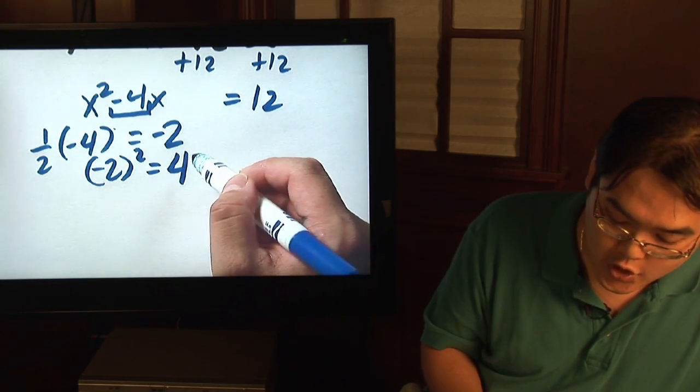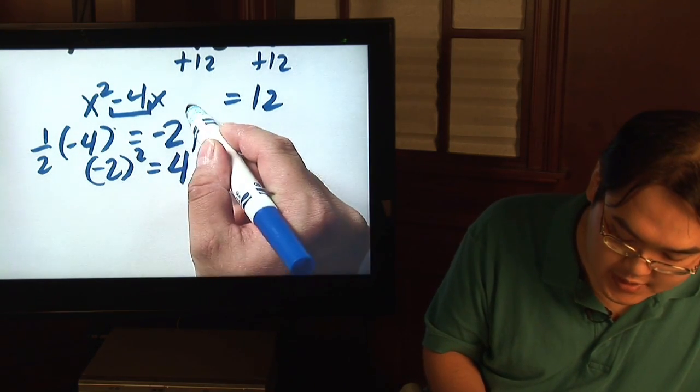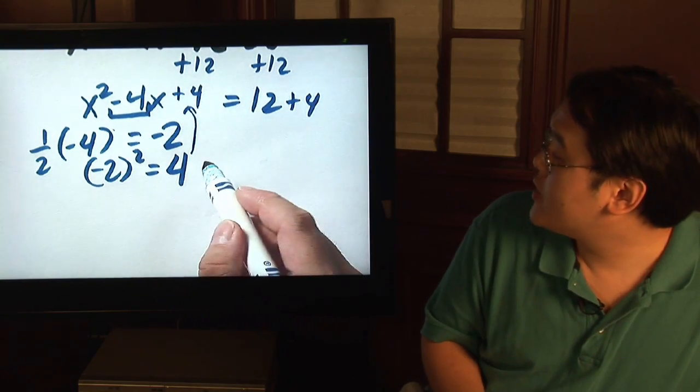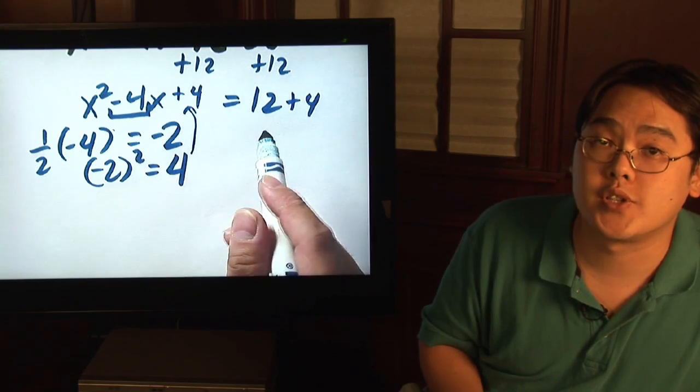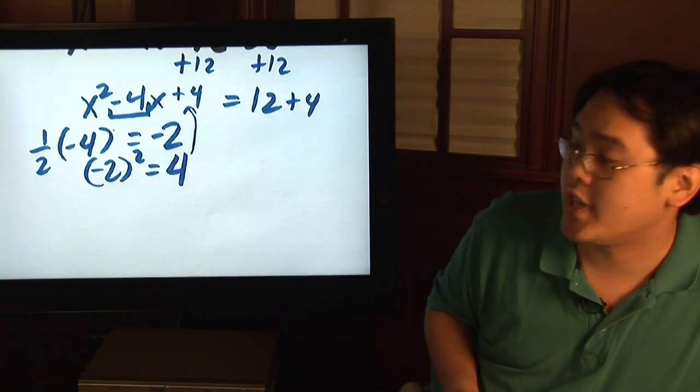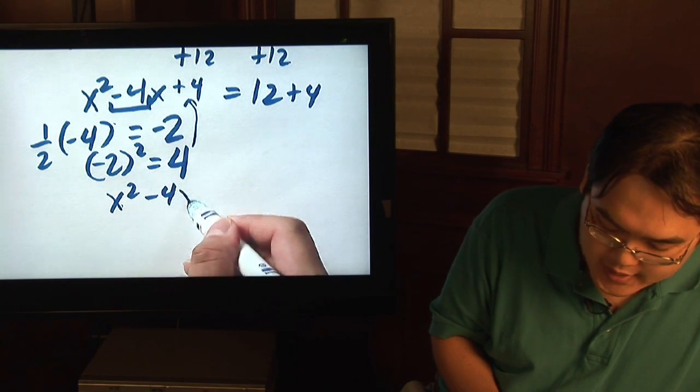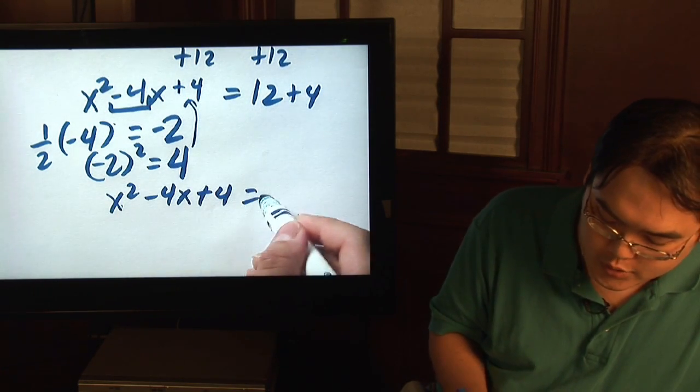What do you do with that 4? You're going to add that to both sides. Why both sides? Well, because this is an equation, you want to keep the balance on both sides. What you do to one side, you have to do to the other. So as a result, you now have x squared minus 4x plus 4 equal to 16.